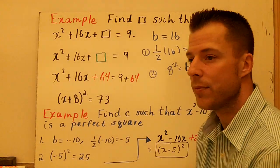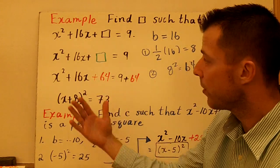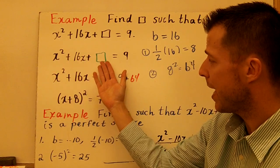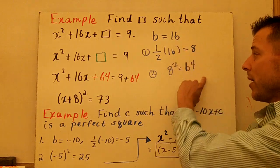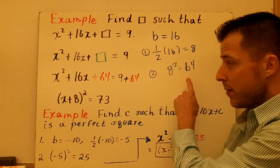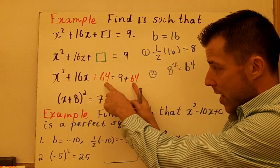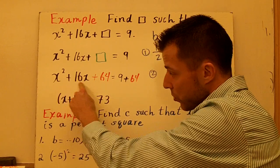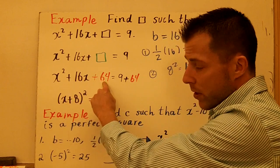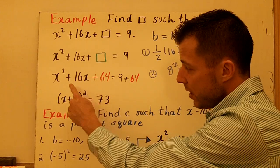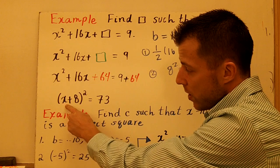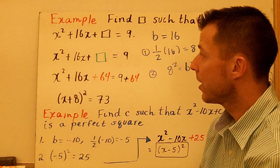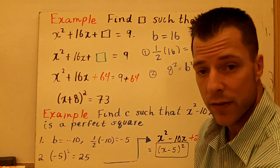Step 3 is adding that to both sides. So x squared plus 16x plus the box equals 9. Half of b squared — we've identified 64 — has to be added to both sides, shown in red here. Now this is a perfect square — I've completed the square. Two numbers that multiply to be 64 and add to be 16 are 8, so you get the quantity x plus 8 squared equals 73. I'm not going to solve it — I just wanted to find that square, and it's 64.